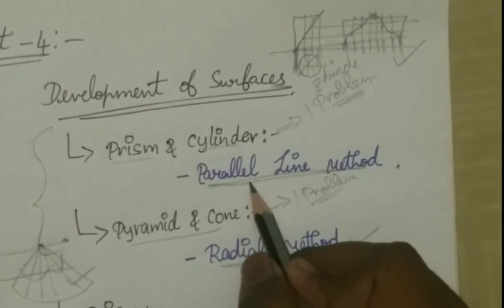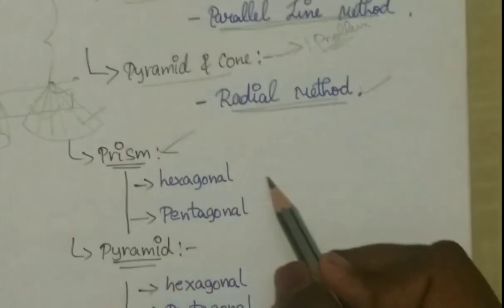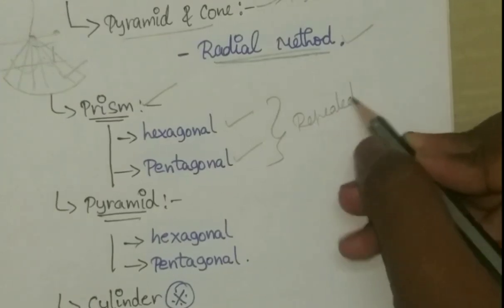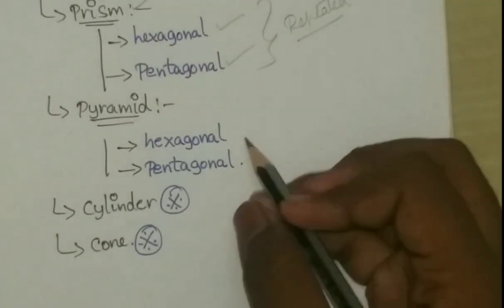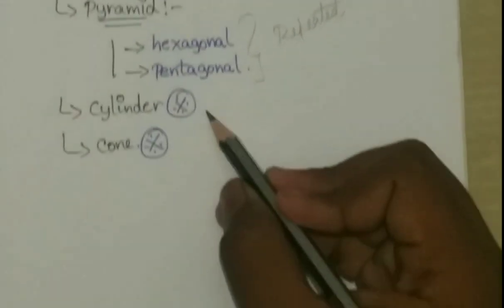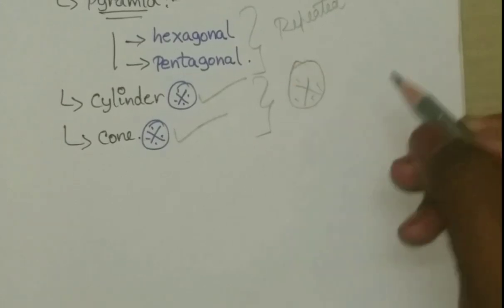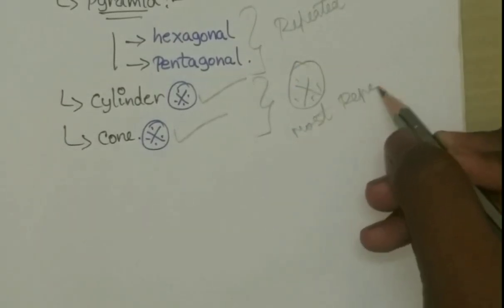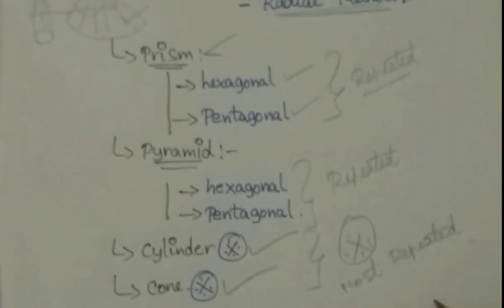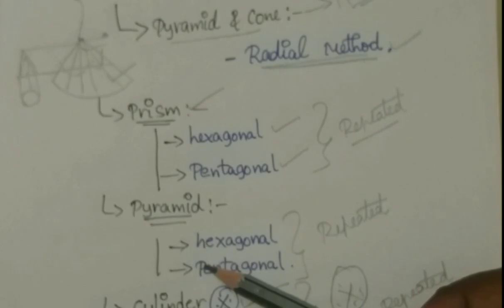This is the radial method, and now the parallel line method. You can find the method for the prism. We will see the prism - hexagonal and pentagonal. That is the pyramid. We will also see the pyramid. Next is cylinder and cone - these are the most repeated questions. That's why we will cover them in this video. We will tell you two problems, so let's practice.